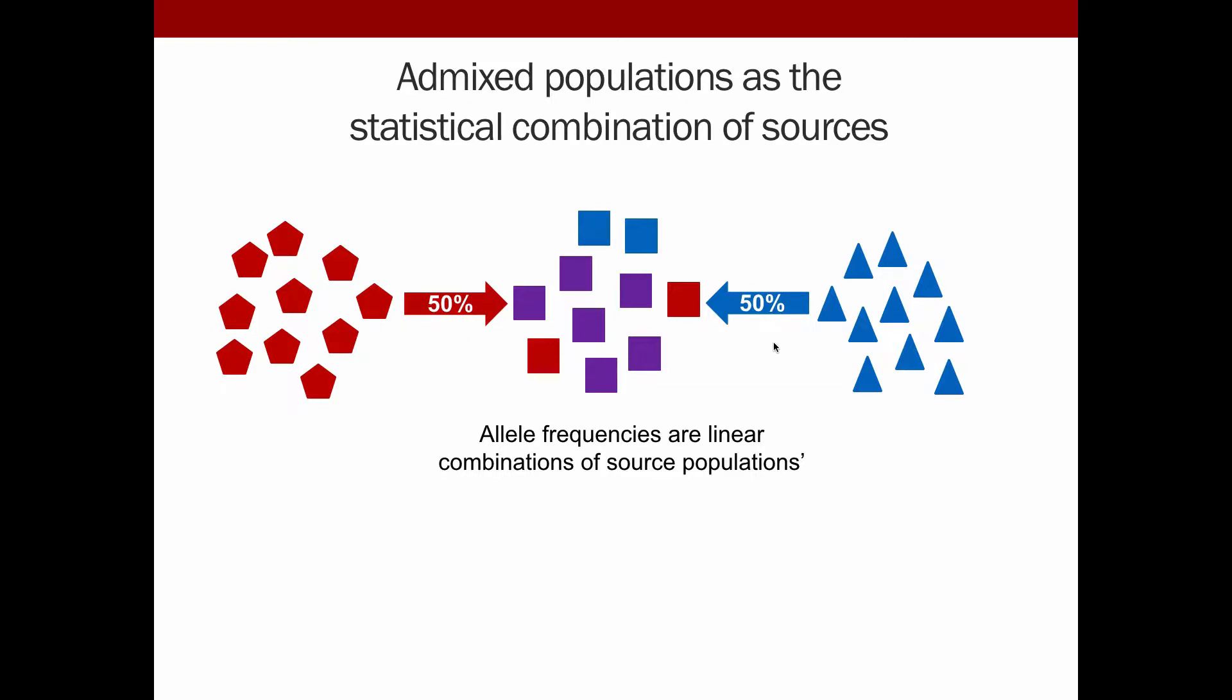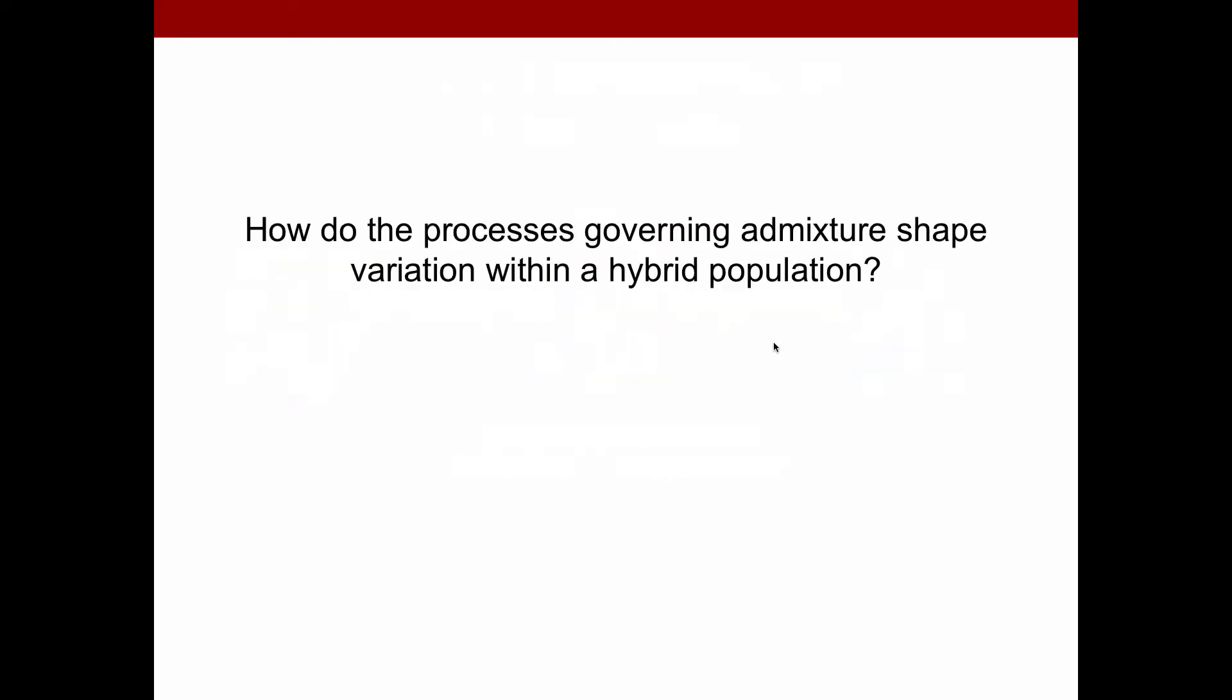Methods based on this approach have led to important progress, for example, to control for structure in GWAS, but they don't capture the complexity of the admixture process, which is what I'm really interested in. Because admixture often varies over space and over time. One of my overarching questions is how do the processes that govern admixture shape variation within a hybrid population?